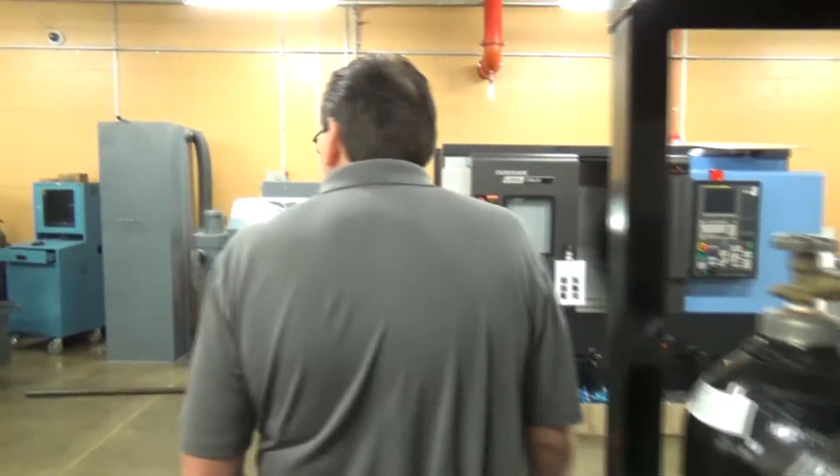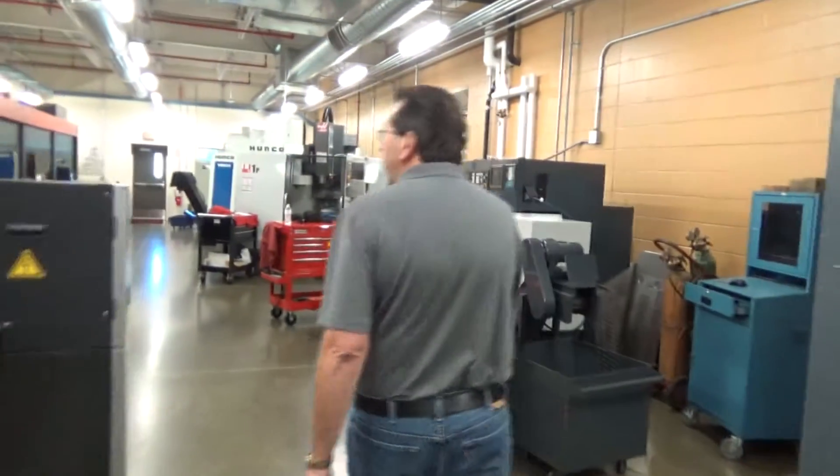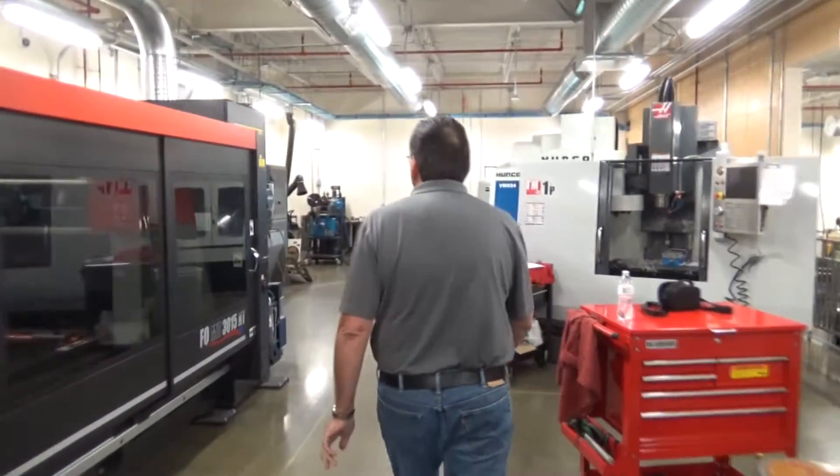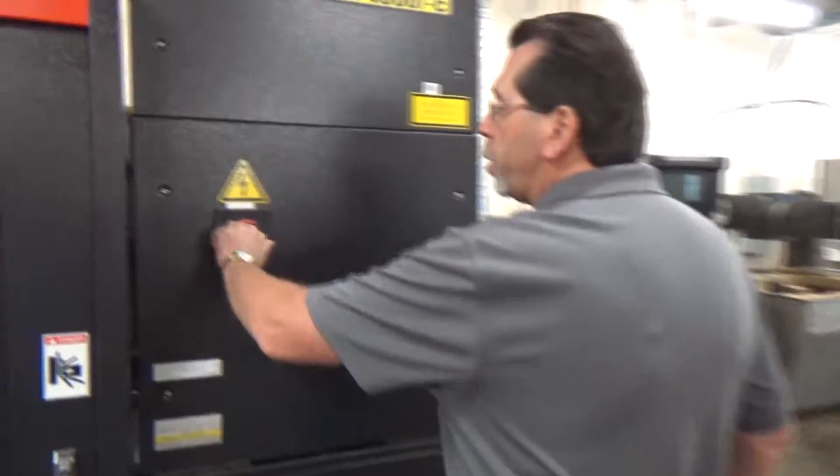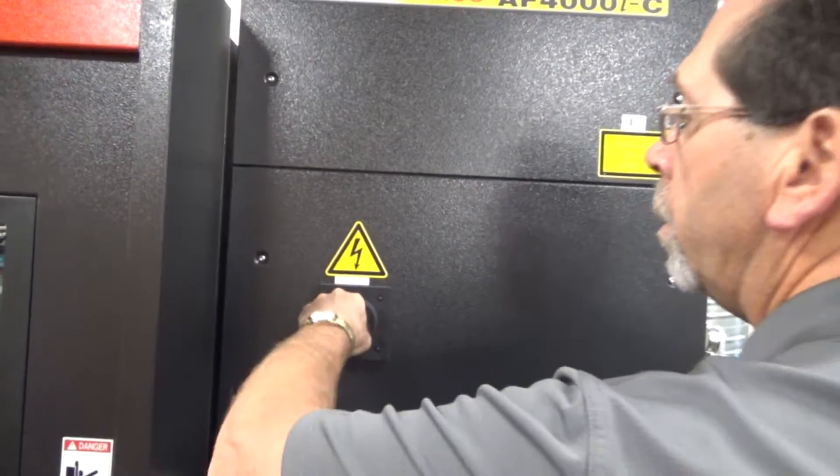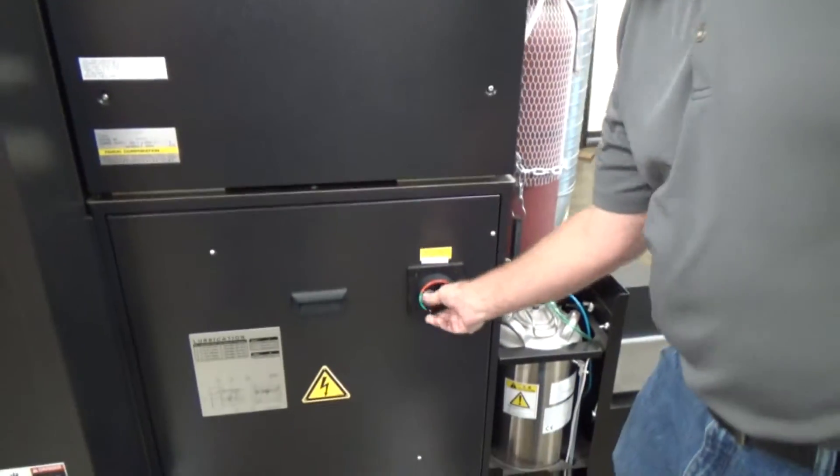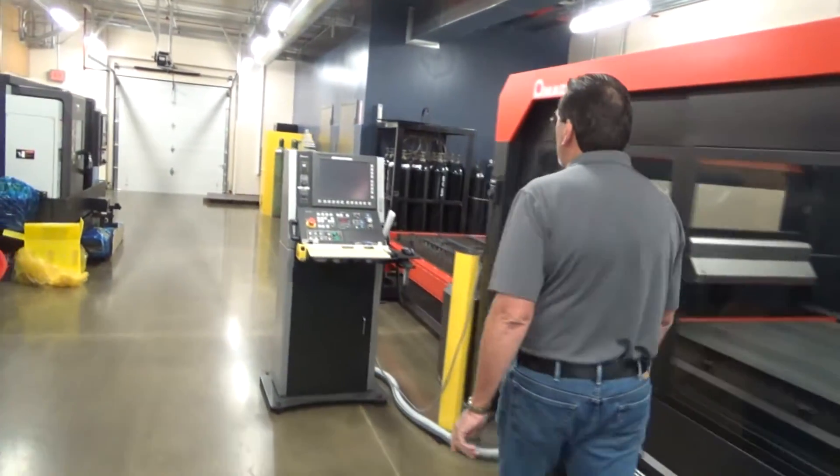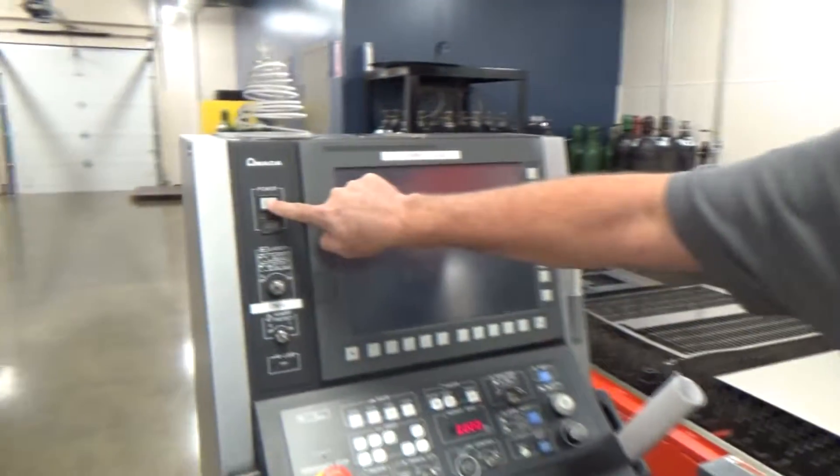Next step will be to turn the main power on the machine. What you have to do is go to off and then on in the sequence it's labeled. Get over to the control. You can hear it start to power up and then you hit the power button on the control.